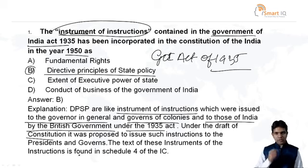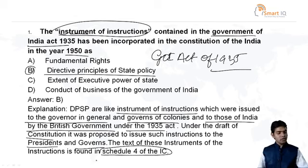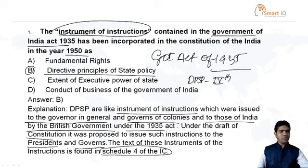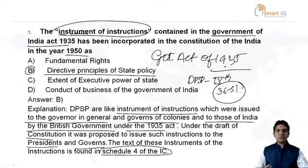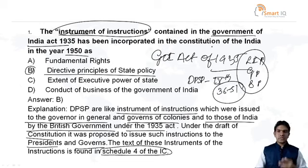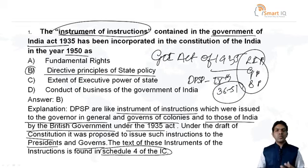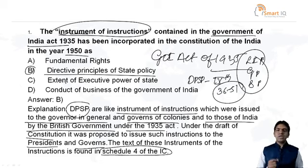Under the draft of the constitution, it was proposed to issue such instructions to the presidents and governors. The text of these instruments of instructions is found in the fourth part of the Indian Constitution, Article 36 to 51. The DPSP is divided into three kinds: liberal intellectual principles, Gandhian principles, and socialistic principles. These are non-justiciable in nature but serve as instructions for the development of India.